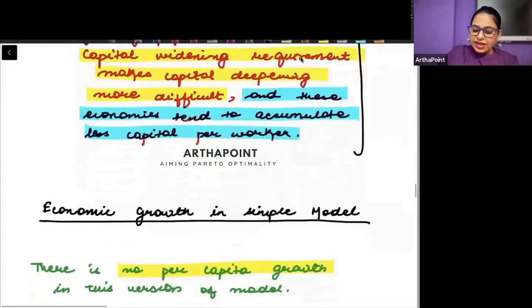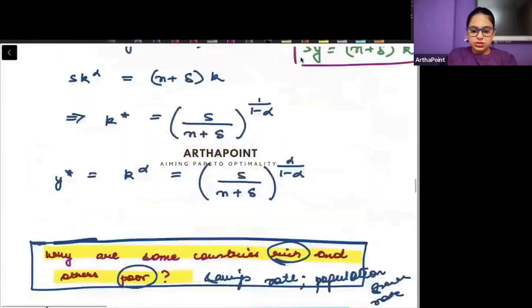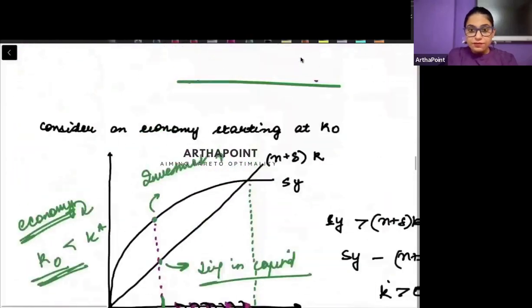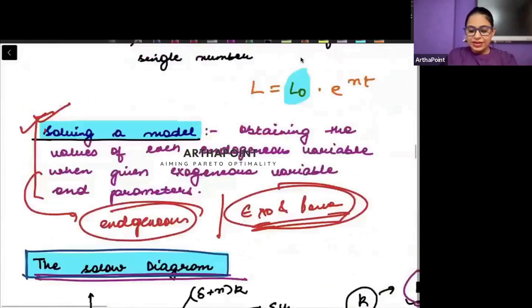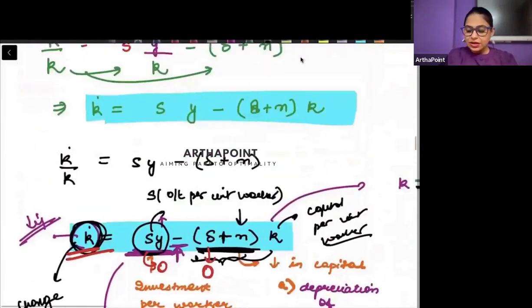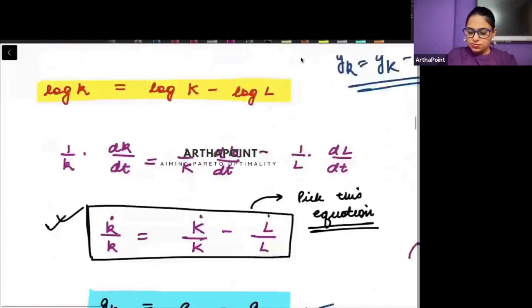We have seen in the last class what capital widening and capital deepening are. If you revisit the concept, you will understand that one talks about capital K whereas the other talks about small k.